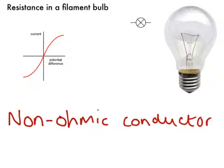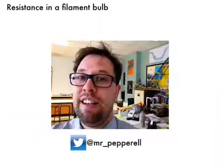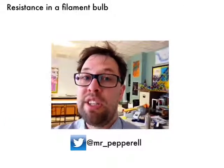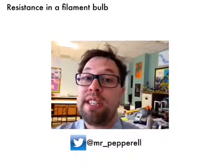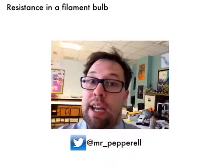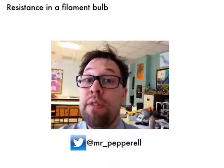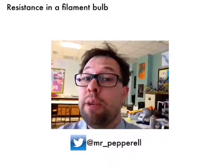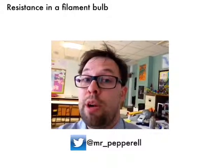What we've actually got here is what we call a non-ohmic conductor. It does conduct electricity, but it doesn't obey Ohm's law. You can also see that taking the battery out and turning it around, reversing the potential difference, makes no difference to the shape of the graph — it still curves off in that same way. So a filament light bulb is an example of a non-ohmic conductor, and as the temperature of the filament increases, the resistance goes up.